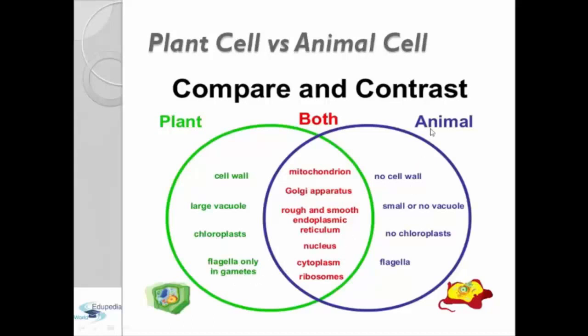While animal cells have no cell wall, small or no vacuoles, and no chloroplasts and flagella.